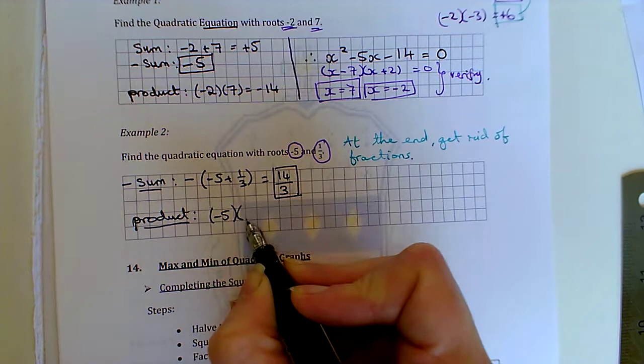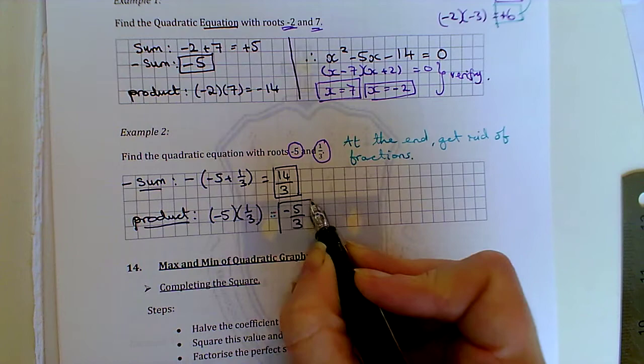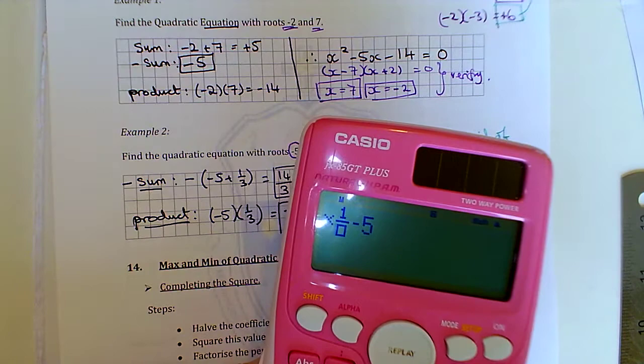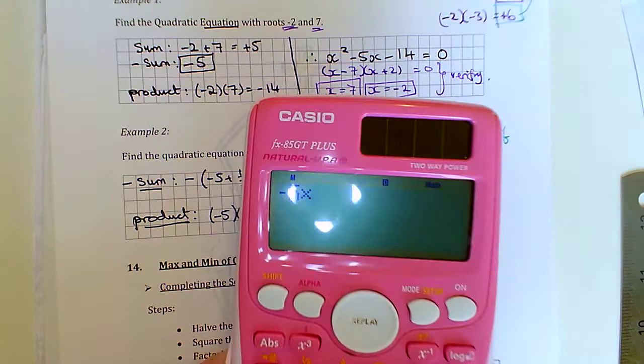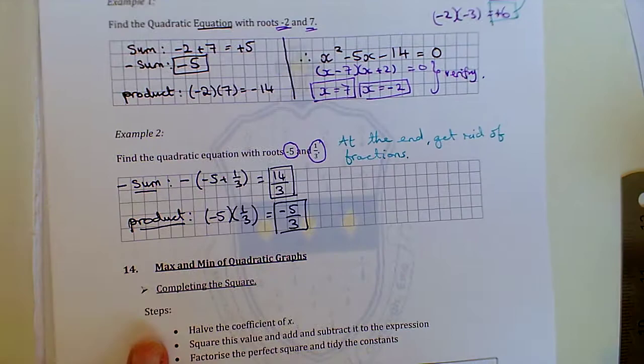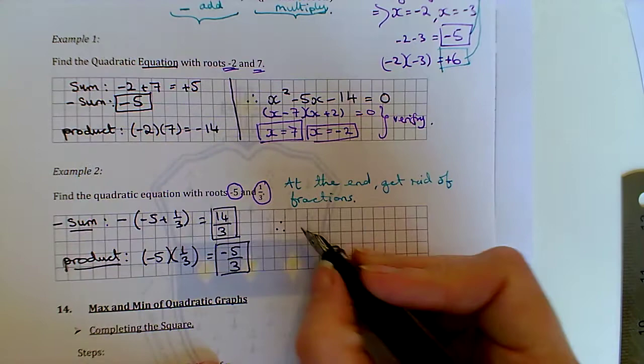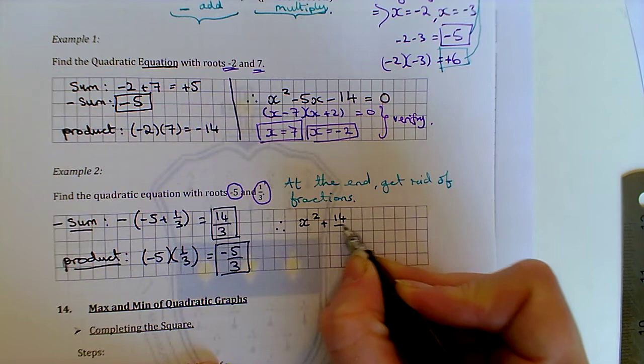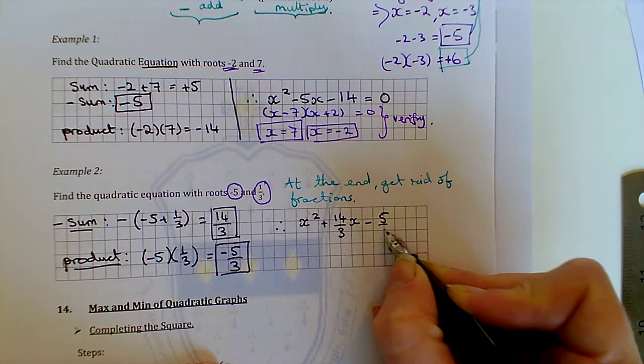And the product will have -5 × 1/3. And that is just -5/3. Again, you can use the calculator to do that. -5 × 1/3, multiplied by 1/3. And we get -5/3. So, therefore, my quadratic equation will be x² plus, this is plus +14/3 times x and this is minus, minus -5/3.